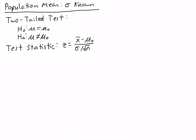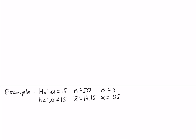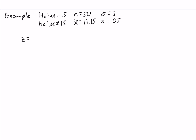This is the same formula we would use for a lower tail test and upper tail test as well. Our test statistic is written z because it follows the standard normal or z distribution. So our test statistic is z equals 14.15 minus 15 divided by 3 over the square root of 50, which equals negative 2.00. We go to two decimal places because we'll be using the z table later, which uses z values up to two decimal places.